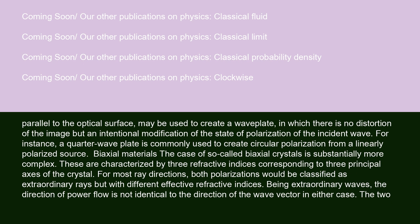The case of so-called biaxial crystals is substantially more complex. These are characterized by three refractive indices, corresponding to three principal axes of the crystal. For most ray directions, both polarizations would be classified as extraordinary rays, but with different effective refractive indices. Being extraordinary waves, the direction of power flow is not identical to the direction of the wave vector in either case.